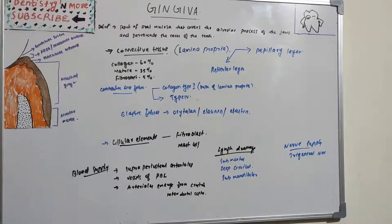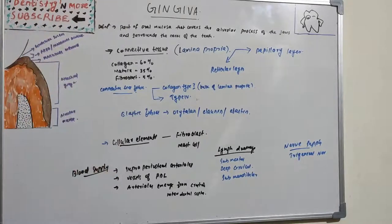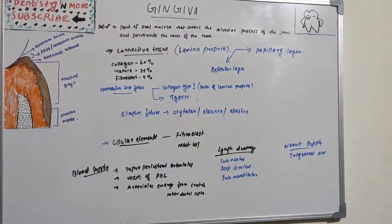Basically around 60 percentage collagen, then we have fibroblast around 5 percentage, and the remaining 35 percentage includes matrix which has vessels and nerves. So it is known as lamina propria.